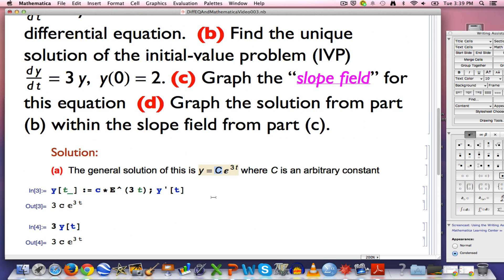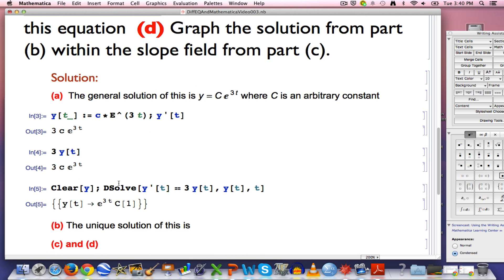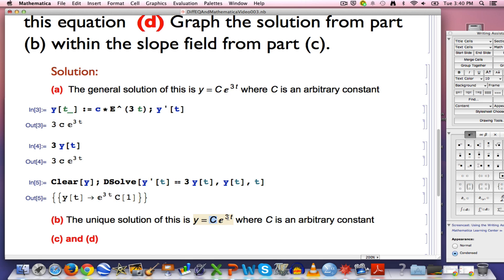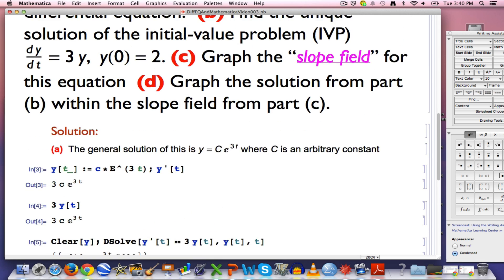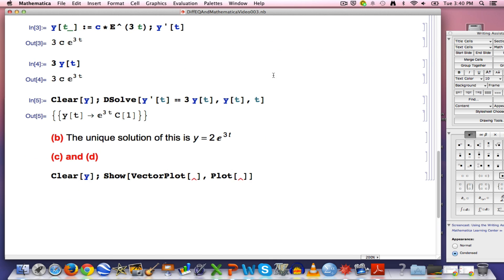How about the initial value problem? Making sure the function goes to the point whose coordinates are t, y equals 0, 2. We want y of 0 to equal 2. Think about that. I hope you realize, since e to the 0 is 1, that c must be 2 to satisfy this initial value problem. The unique solution of the initial value problem is, let's copy and paste this to save a little time, replace c with 2. That one function is the unique solution of the initial value problem that solves the differential equation and also satisfies the initial condition.